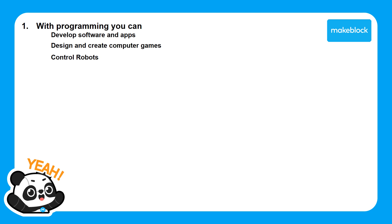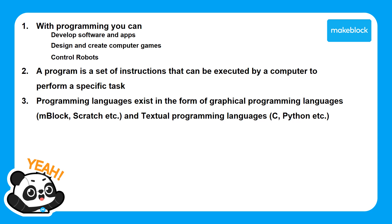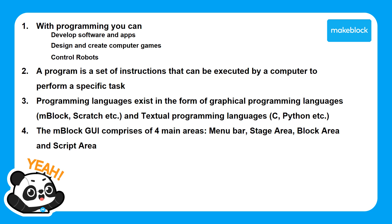Let's summarize all of the key concepts that we've learned throughout this lesson. First, with programming you can develop all kinds of software and apps, design and create computer games, and control robots. Second, a program is a set of instructions that can be executed by a computer to perform a specific task. Third, programming languages exist in the form of graphical programming languages such as Makeblock and Scratch, and textual based programming languages such as C programming and Python. Lastly, the mBlock Graphical User Interface or GUI comprises four main areas: the menu bar, the stage area, the block area, and the script area.